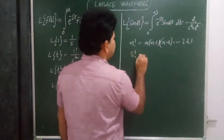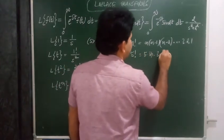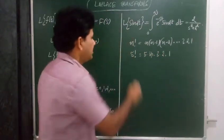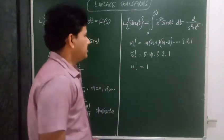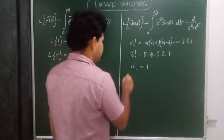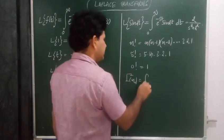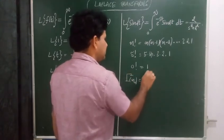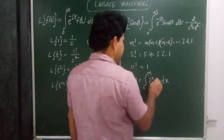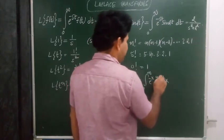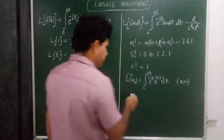5 factorial equals 5 times 4 times 3 times 2 times 1. And 0 factorial value is 1. Here we have the gamma function. Gamma of n is defined as the integral from 0 to infinity of x to the power n minus 1 dx, where n is greater than 0.